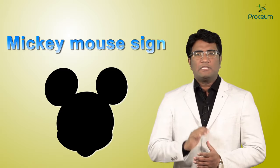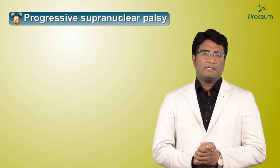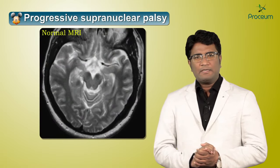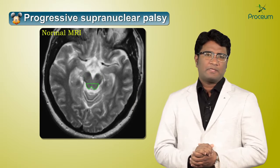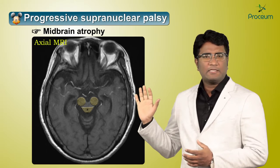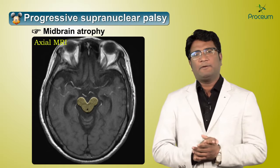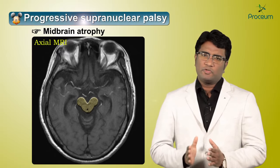The first place to remember the Mickey Mouse sign is progressive supranuclear palsy. Progressive supranuclear palsy is associated with midbrain atrophy. On the normal axial MRI of the brain, it shows a healthy cross cerebris — the squarish cross cerebris — as well as the tectal area of the midbrain. In progressive supranuclear palsy, the atrophic midbrain and the rounded cross cerebris take the shape of a Mickey Mouse. So, Mickey Mouse appearance on axial MRI brain suggests atrophic midbrain seen in cases of progressive supranuclear palsy.